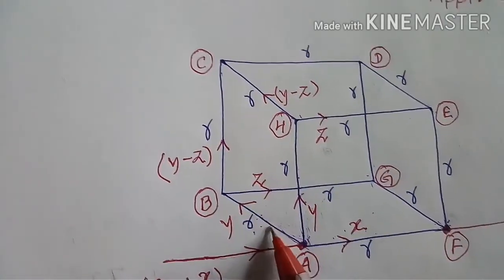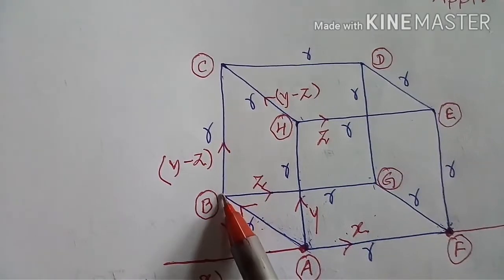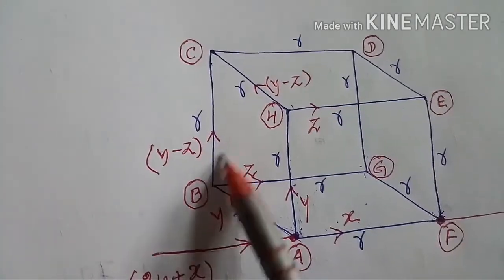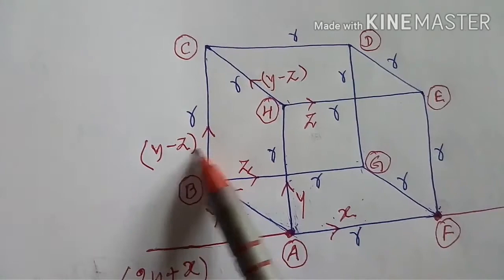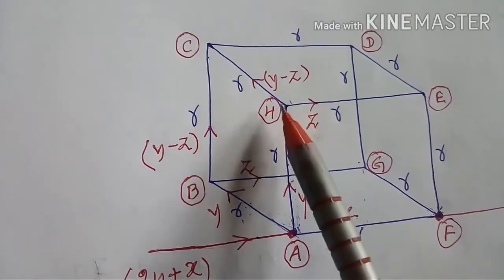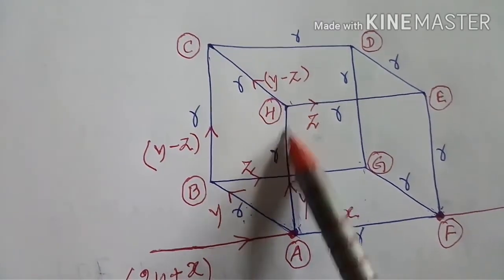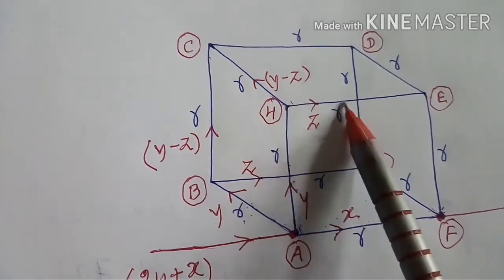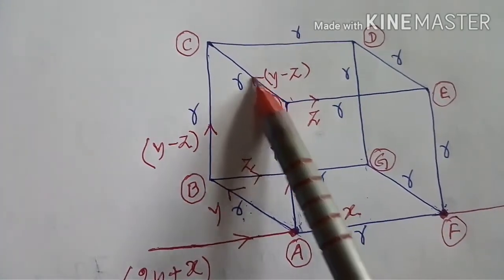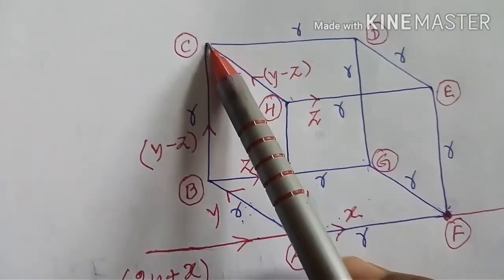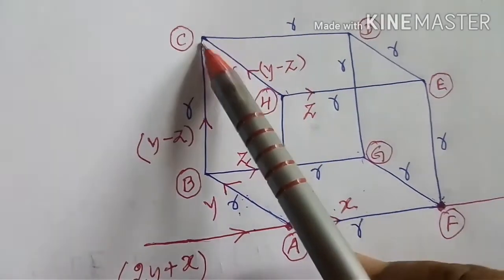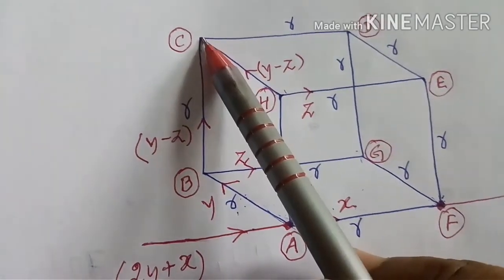At each intermediate point, y is arriving and Z is flowing out, so the remaining current continuing forward is y minus Z. This applies symmetrically: y minus Z leaves from one side and y minus Z from the other, and these two streams meet at point C, where the only remaining path forward carries a current of 2(y minus Z).